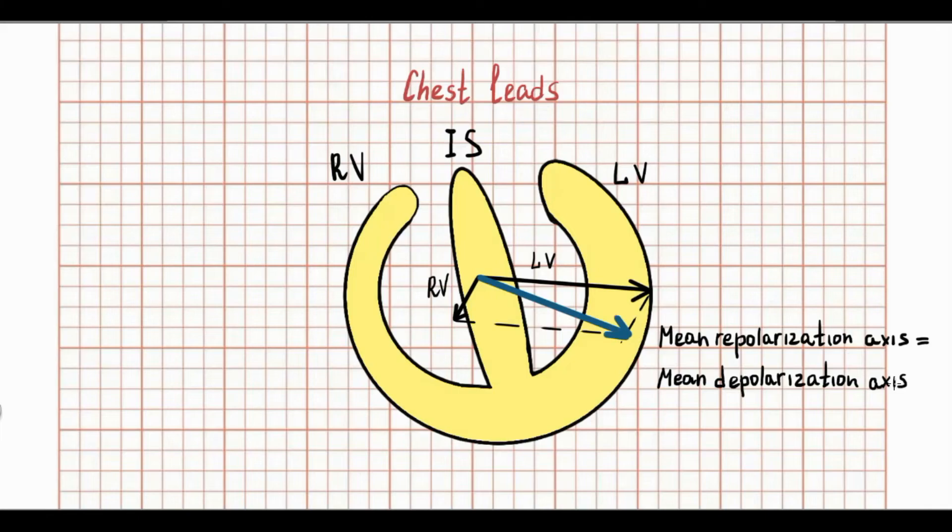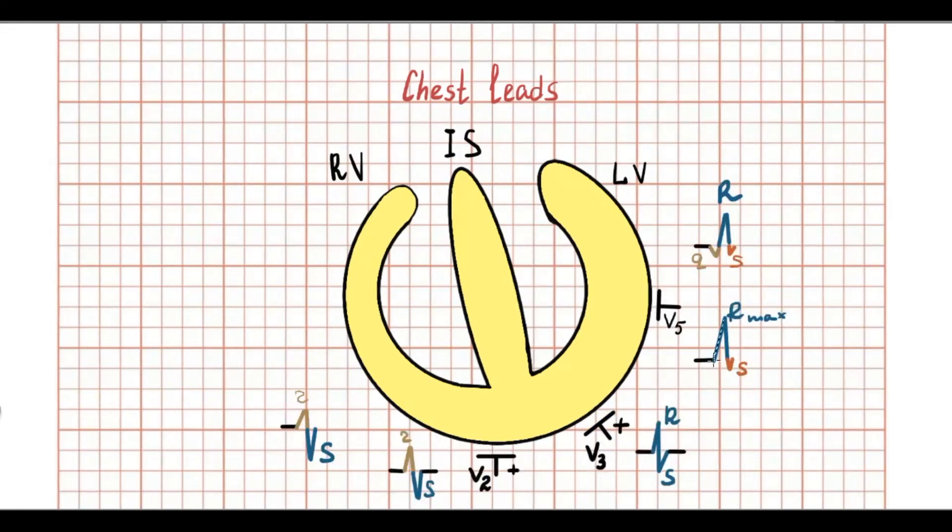T wave represent ventricular repolarization. Hence, both R wave and T wave have the same axis. In general, all leads that show big negative S wave have a tendency to show negative T wave.